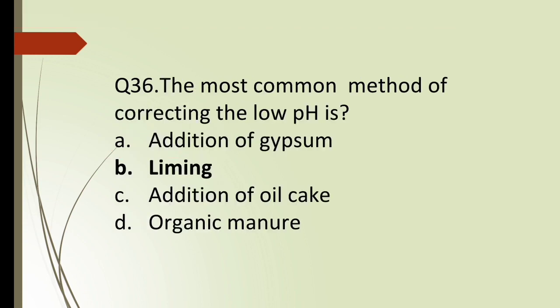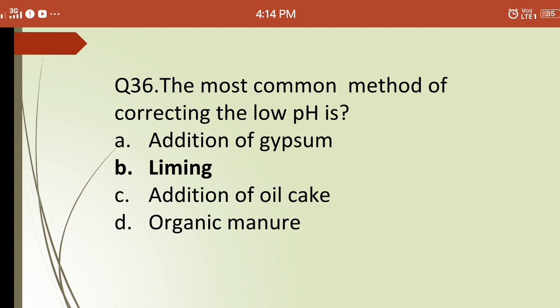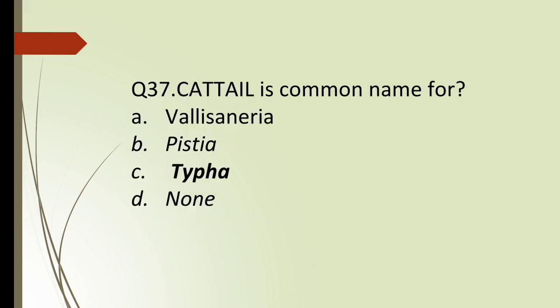Thirty-sixth question: the most common method of correcting low pH in a pond is? Options are: (a) addition of gypsum, (b) liming, (c) addition of oil cake, (d) organic manure. The correct answer is (b) liming — liming is used to correct low pH in ponds.